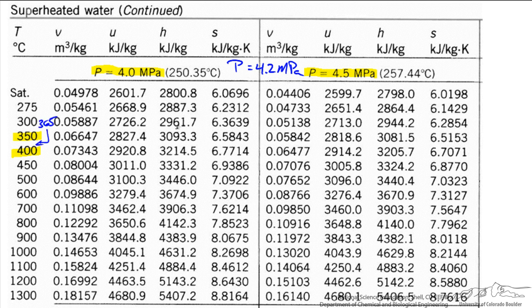If the problem specified a pressure of 4 MPa, it wouldn't be so bad because we just interpolate between this specific volume at 350 and the specific volume at 400. Or if the problem said evaluate the pressure at 4.5 MPa, it wouldn't be so bad, we could just interpolate between these two specific volumes.